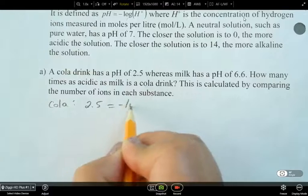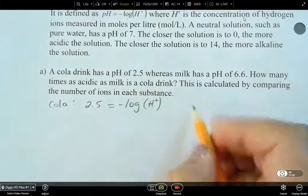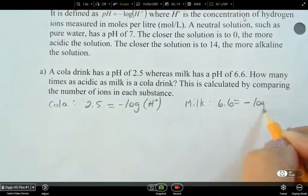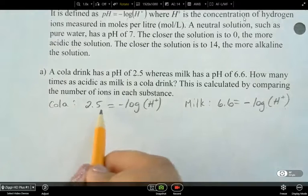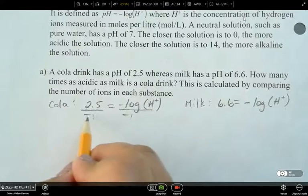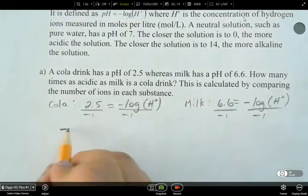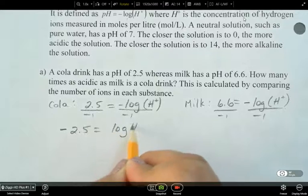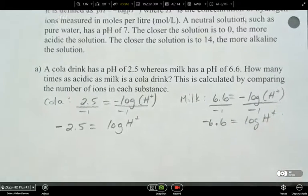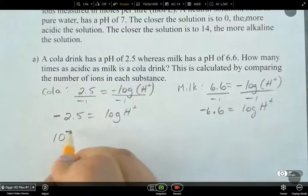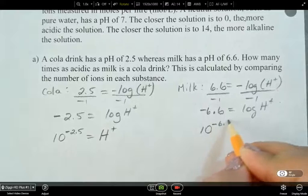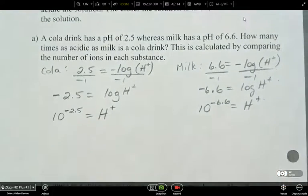I've got the cola. So it's 2.5, and that's equal to negative log of H plus. And the milk is 6.6, and that's negative log of H plus. So let's switch this to the exponential form. Why don't we first just take that negative 1 and divide both sides by negative 1 so that we end up with negative 2.5 equals log of H plus and negative 6.6 equals log of H plus. So we can compare the two in exponential form now. I've got 10 to the power of negative 2.5, and that is my H plus. And here, I've got 10 to the negative 6.6 equals my H plus.